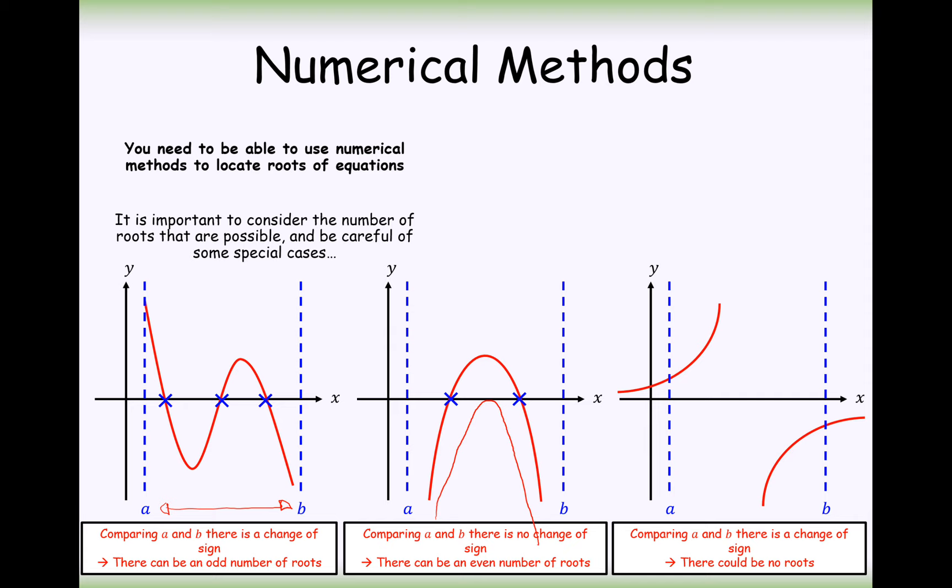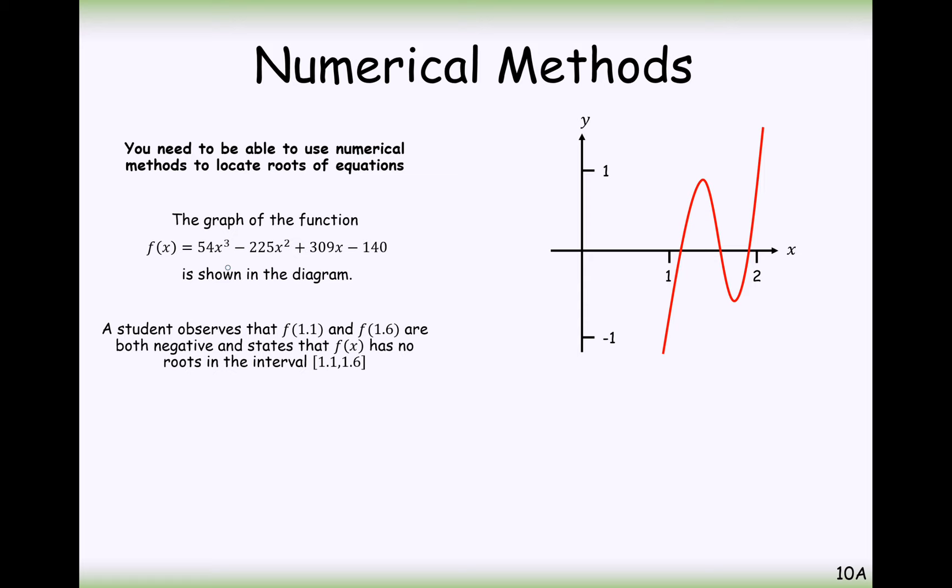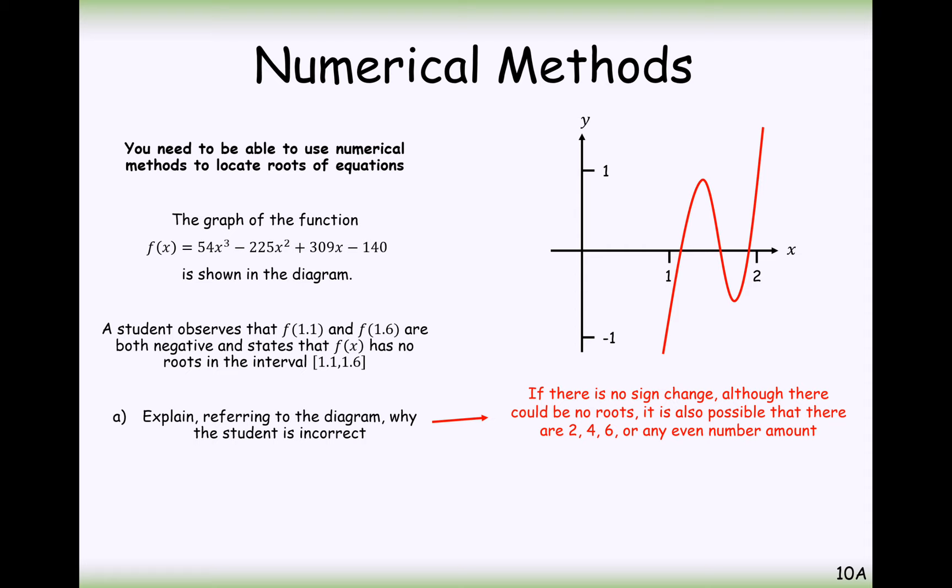Okay. We have a function here. It's quite a complicated cubic function. A student observes that f of 1.1 and f of 1.6 are both negative and states that f of x has no roots in the interval from 1.4 to 1.6. Explain, referring to the diagram, why the student is incorrect. Well, just from looking at the graph here, 1.1 seems to happen at about here, and 1.6 seems to happen at about here. And you can see here that both of the outputs at these points here are probably going to be both negative. So there is no change in sign.